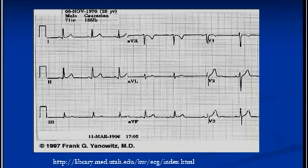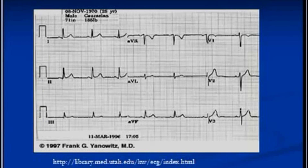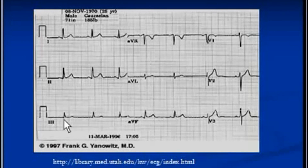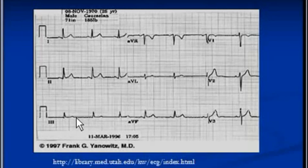This ECG does not show S1, Q3, or T3 pattern, but I just wanted to show you lead 1, lead 2, and lead 3. If it were to show an S1, Q3, and T3 pattern, you'll see a prominent S wave in lead 1 here. In lead 3, you'll see a prominent Q wave here, and this T wave will be inverted. So that is S1, Q3, T3 pattern.